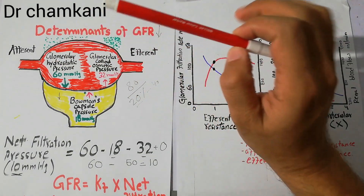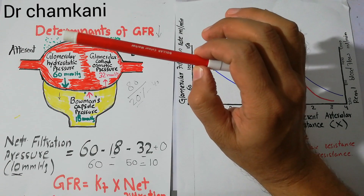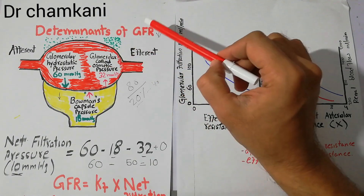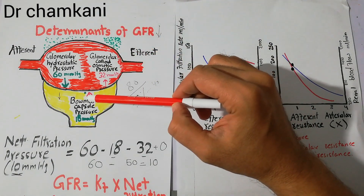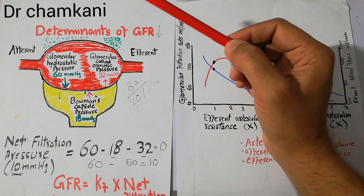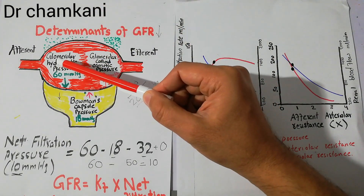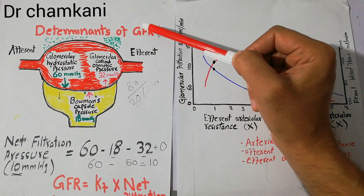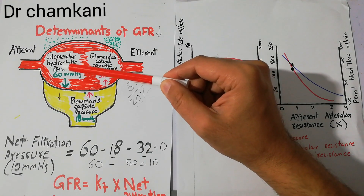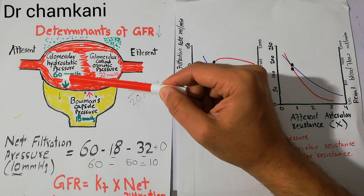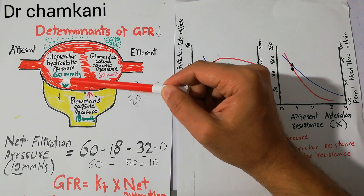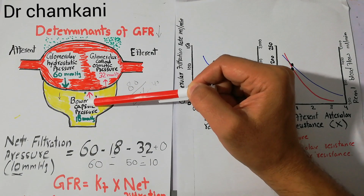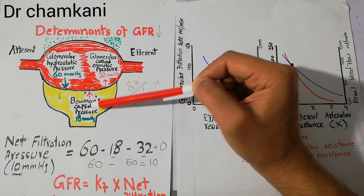The glomerular hydrostatic pressure is the primary force, the primary pressure which determines changes in the GFR. Although we discussed the glomerular colloid osmotic pressure and Bowman's capsule pressure — they have some effects on the GFR — they are not the primary determinants. Glomerular hydrostatic pressure is the most important pressure which can lead to changes in the GFR. It is normally around 60 mmHg and it is a positive pressure for filtration, meaning it helps the filtration process. The glomerular colloid osmotic pressure and Bowman's capsule pressure are negative pressures because they oppose filtration.